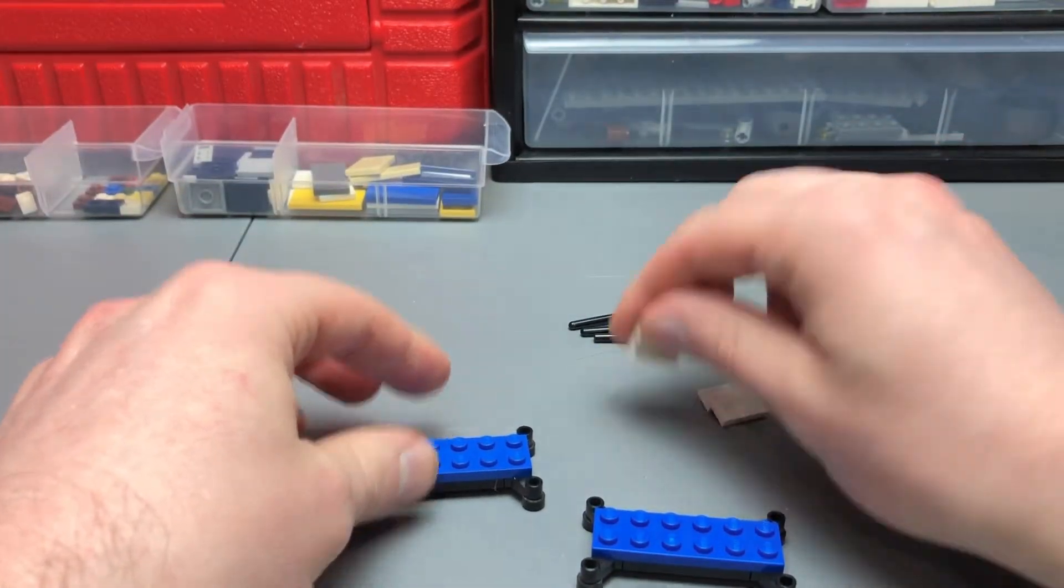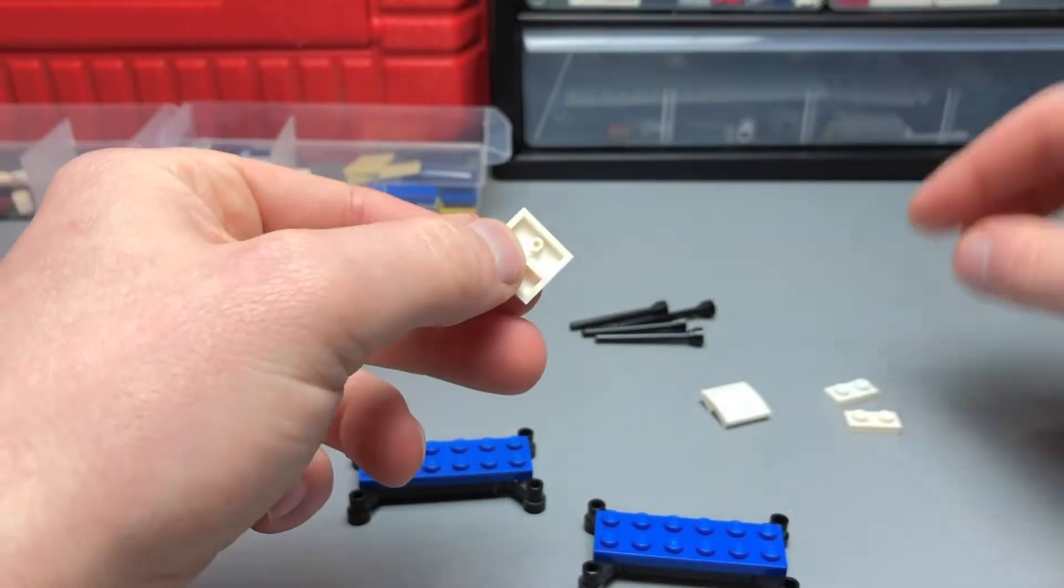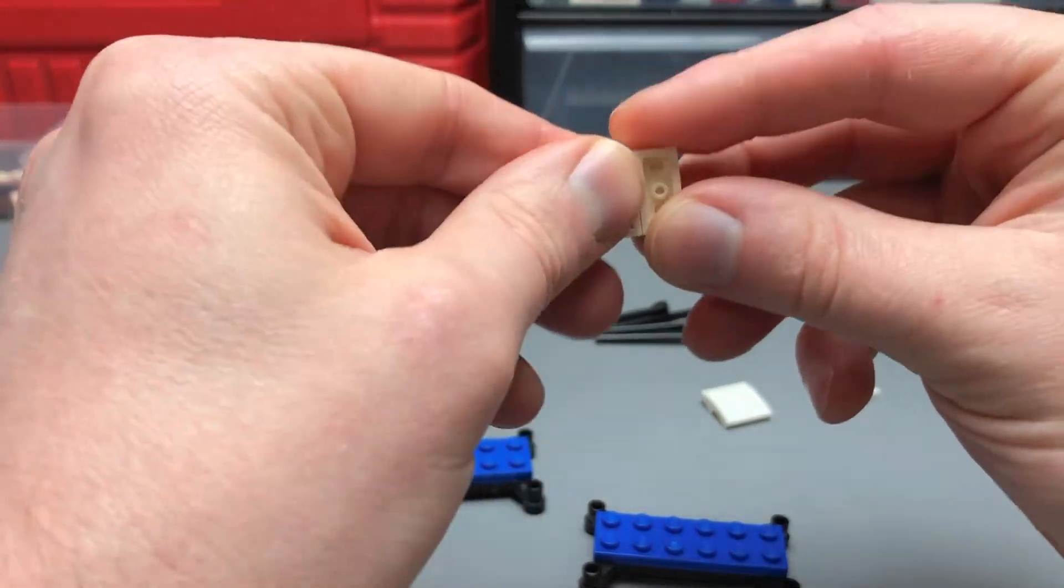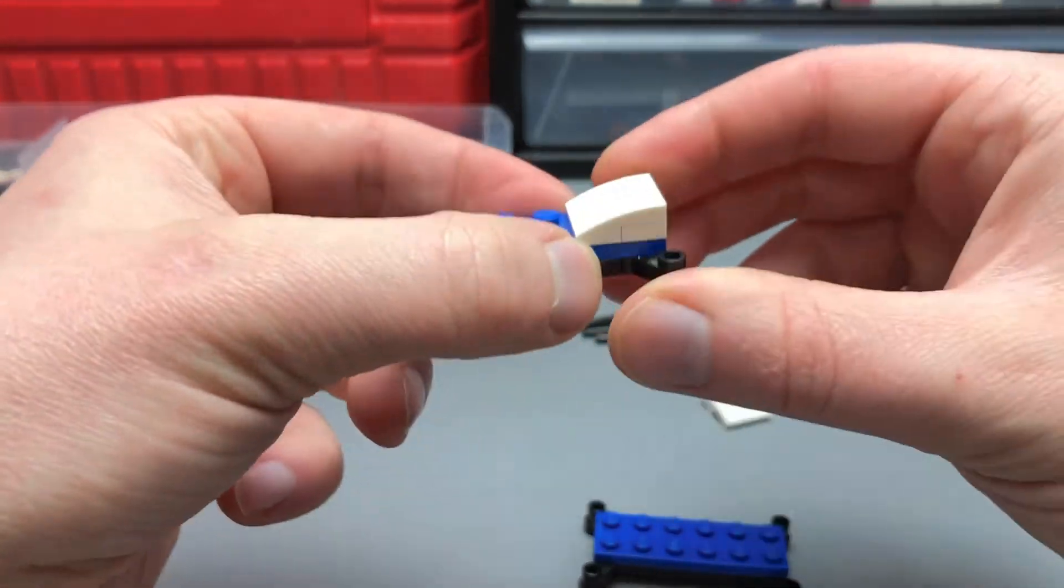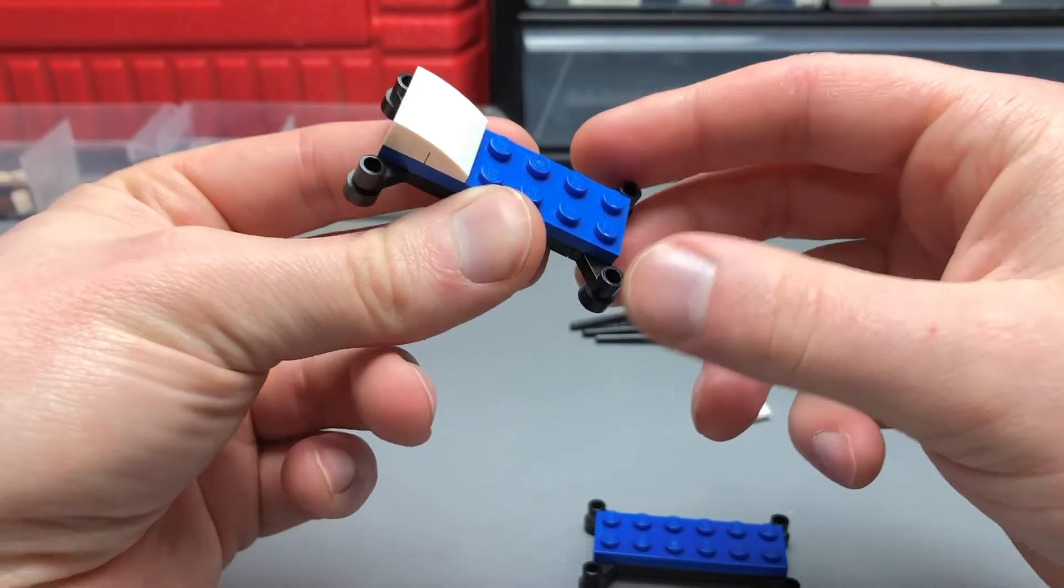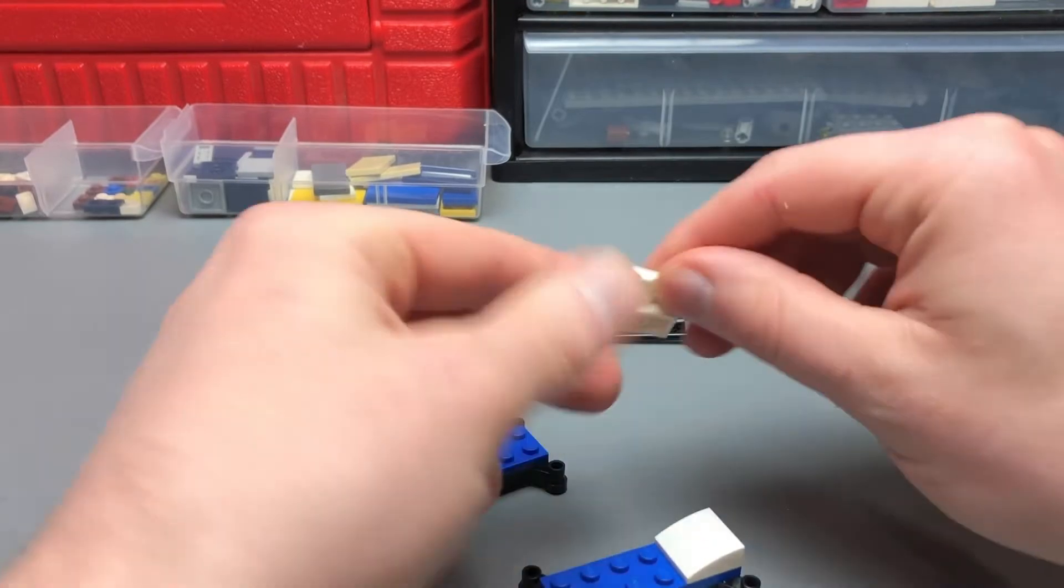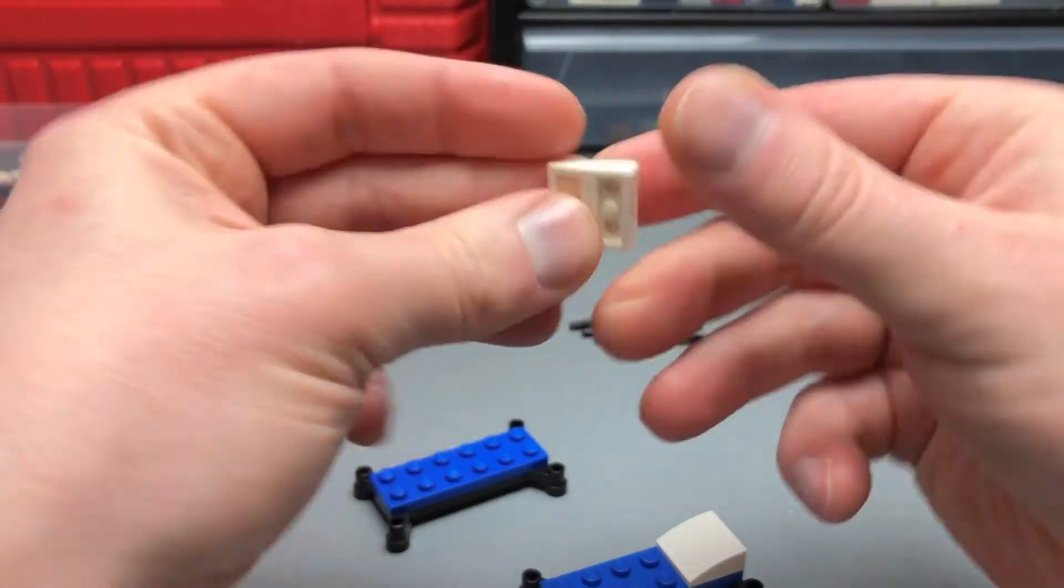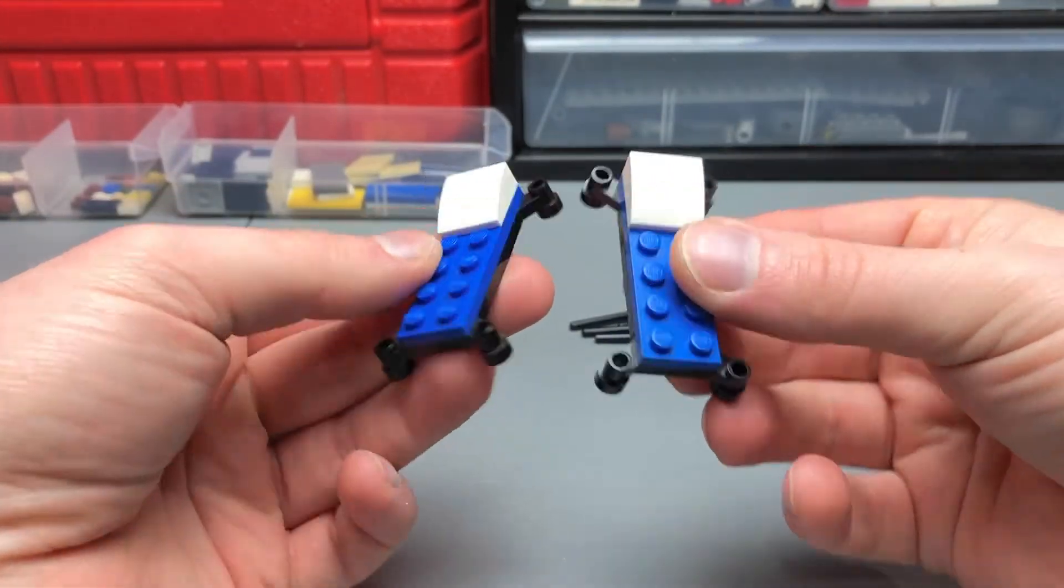Then we're going to take these 2x4 curved slopes, and we'll take a 1x2 plate, and we'll just attach those together, at which point we will then place that at the very top of each of our 2x6 pieces. Whoops! Okay, so we'll go ahead and do that again. Okay, so that's what we have right now.